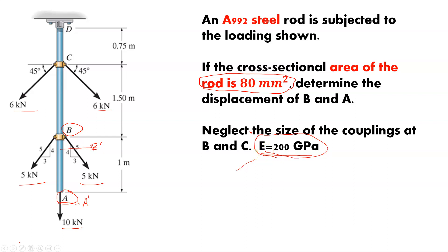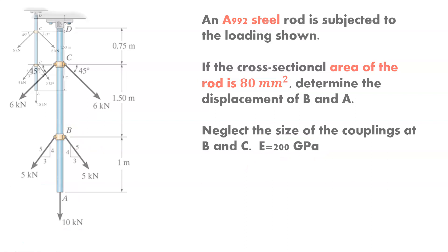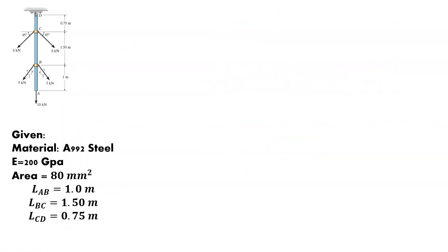Let's set up this problem so we can start solving it systematically. First, let's take care of everything we've been given. We know the material is A992 steel. The modulus of elasticity is 200 GPa. The cross-sectional area throughout the rod is 80 millimeters squared. We also have the various lengths of the sections. This is going to become important as we figure out what's going on at sections A and B.